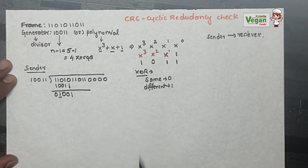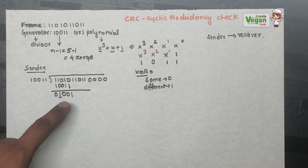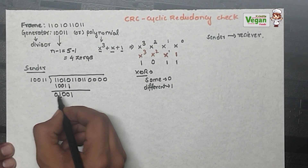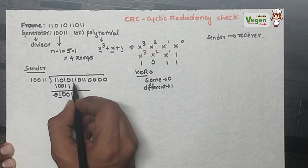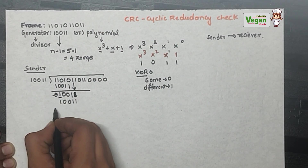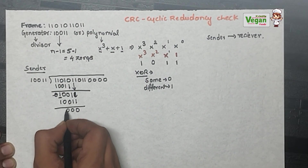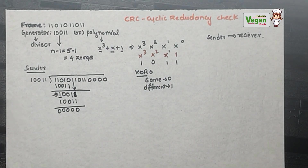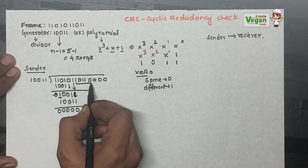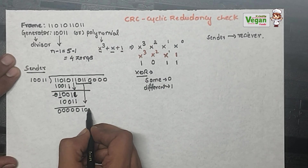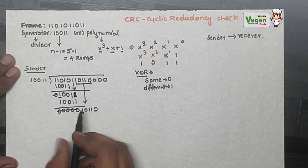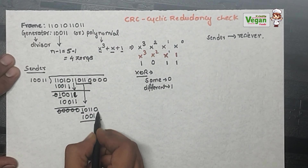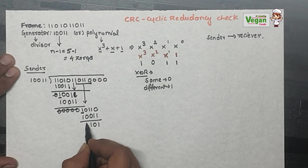For the next step, we bring down bits and divide again with 10011. If the result starts with zeros, we strike them out and bring down that many bits from the frame. Continuing the division steps: different inputs give 1, same inputs give 0. After each step, if the result starts with zeros, strike them and bring down additional bits accordingly.